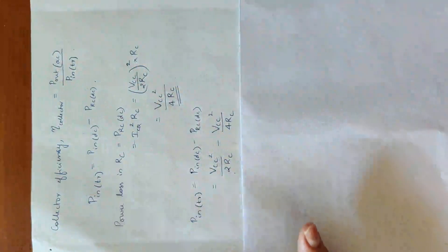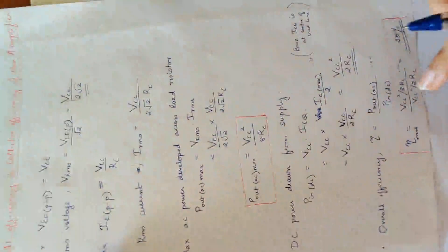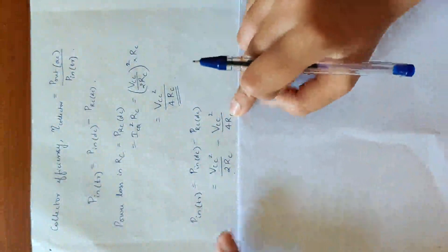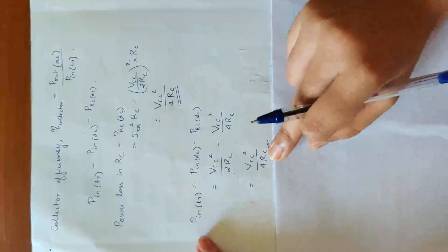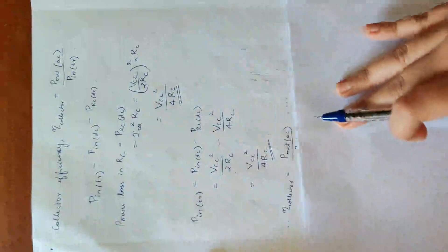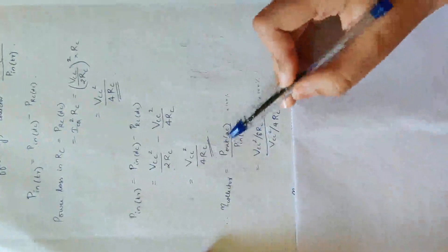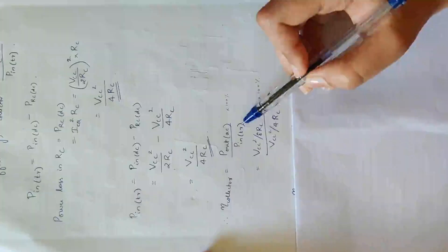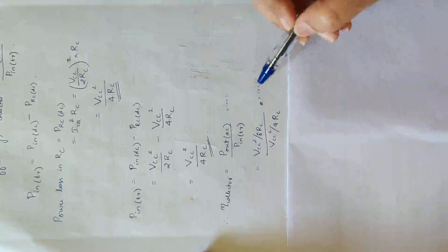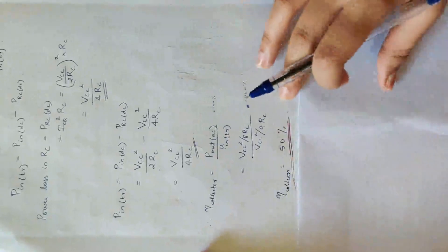ICQ squared times RC, where ICQ equals VCC/2RC. So P_in_DC is VCC squared by 2RC. Then P_in_transistor equals VCC squared by 2RC minus VCC squared by 4RC, giving VCC squared by 4RC. P_out_AC is VCC squared by 8RC. Collector efficiency = P_out_AC divided by P_in_transistor: (VCC squared/8RC) divided by (VCC squared/4RC) multiplied by 100 equals 50%.